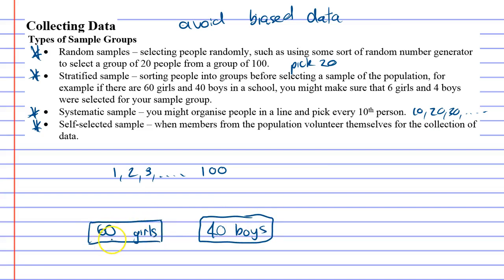And they might go, well, because there's 60 girls and 40 boys, and we just want to pick 10 of them, we want to make sure that six of the people we pick are girls and four of them are boys, to keep the ratio the same. And stratified sample is all about keeping the ratios the same.